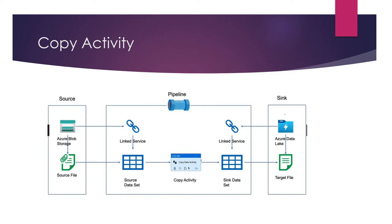This is my source file and I need to copy it to Azure Data Lake Gen 2. To perform this copy activity from source to destination, we are using Azure Data Factory. To copy data from source to sink, we require two datasets under ADF — a source dataset and a sink dataset. We also require two linked services: one connecting Azure Blob Storage to the source dataset, and the second connecting the sink dataset to Azure Data Lake Gen 2 storage. We perform this copy activity under the pipeline.